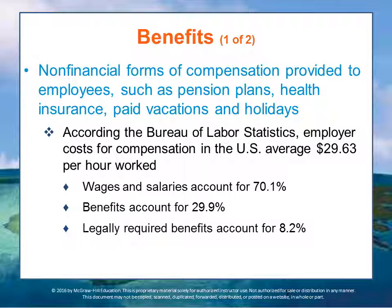According to the Bureau of Labor Statistics, employer costs for employee compensation for civilian workers in the United States average about $29.63 per hour worked. Wages and salaries account for approximately 70.1 percent of those costs, while benefits account for about 29.9 percent. Legally required benefits — including Social Security, Medicare, federal and state employment insurance, and workers' compensation — account for 8.2 percent of total compensation, and such benefits increase employee security and improve morale.